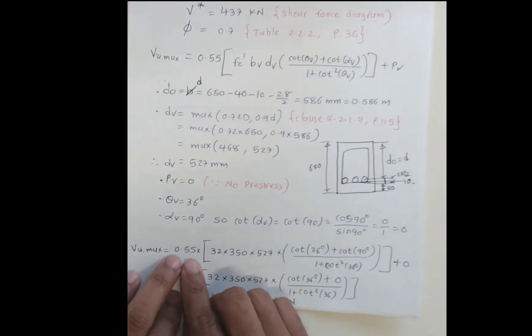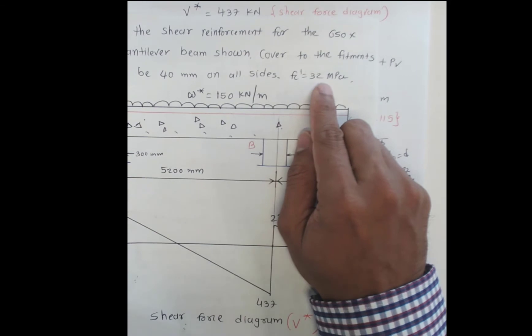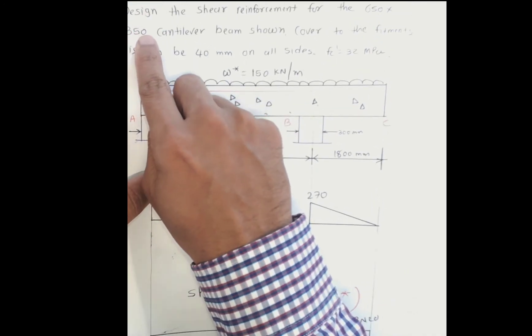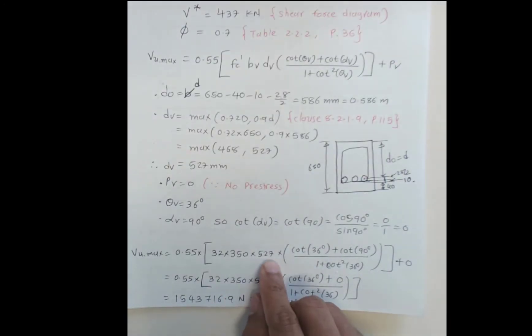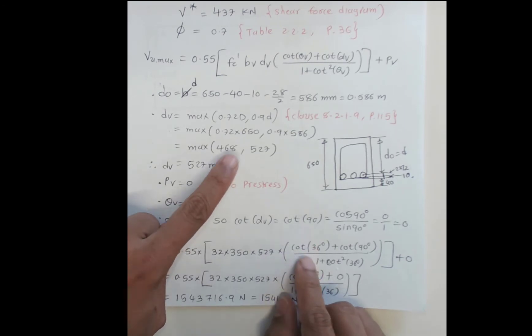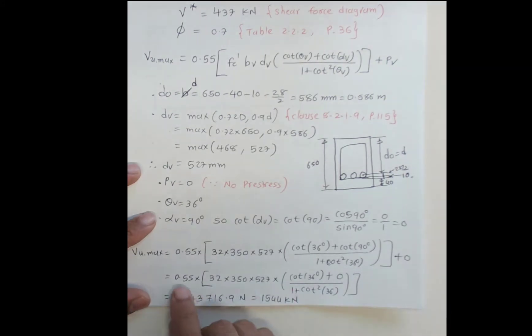We substitute all these values into the equation: 0.55 × fc' × bv × Dv × (cot θv + cot αv) / (1 + cot² 36°) + Pv. fc' is 32 MPa given in the question. bv is 350mm, the width of the beam. Dv is 527mm. θv is 36 degrees, αv is 90, and Pv is zero. Note that cot 36 is 1/tan 36. Simplifying and dividing by 1000 to convert to kilonewtons gives 1544 kN.